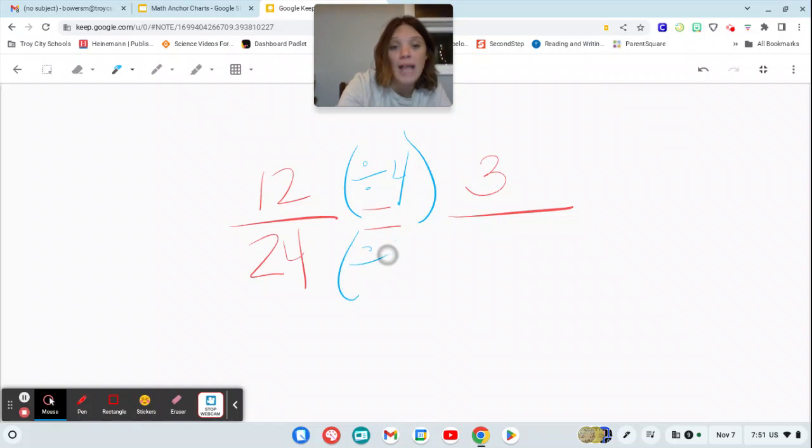So if the same rule has to apply to the denominator, I'll ask myself, what's 24 divided by 4? And that is 6. So 12 24ths is equivalent to the fraction 3 6ths.